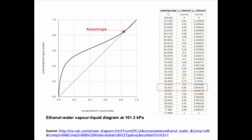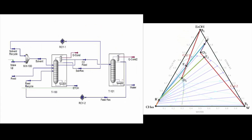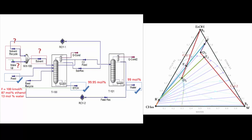The azeotrope can be broken using an entrainer. Typically, the data we know when designing an azeotropic distillation system are the flow rate and composition of the ethanol and water feed and the desired composition of the ethanol and water products, and we need to find out how much entrainer is needed to achieve the ethanol purity. We also want to minimize the waste of the entrainer and the ethanol for economical reasons, so these streams are recycled back to the first column.